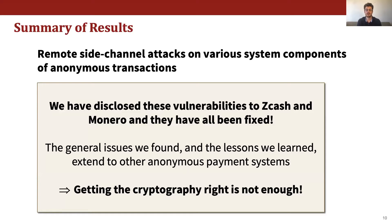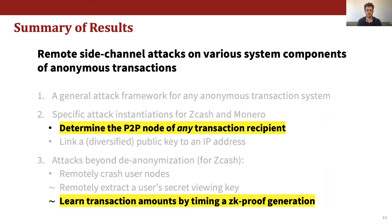Some of these fixes actually required rethinking some of the system design choices for anonymous transactions. A particularly important lesson from our work is that getting the cryptography right is not enough, and that there are many system-level issues such as side channels that can compromise privacy. In this video, I'll focus on the attacks we found for de-anonymizing transaction recipients and on timing side channels in Zcash's zero-knowledge proofs. For the rest of our results, I'll invite you to read our full paper.